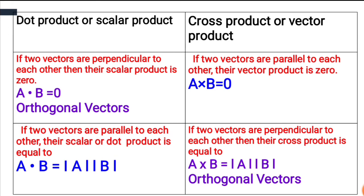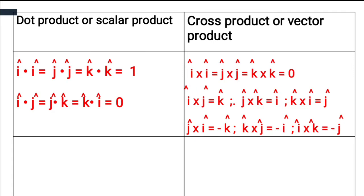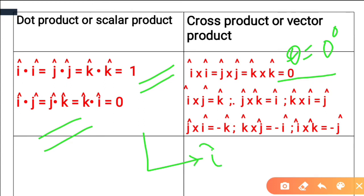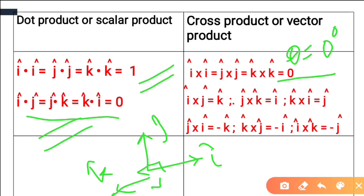For dot product, same unit vectors give answer 1: i·i = j·j = k·k = 1. But for cross product, the same unit vectors give 0, because the angle between same unit vectors is 0°, and sin 0° = 0. The unit vectors i, j, k are mutually orthogonal — i is in the x-direction, j in y-direction, k in z-direction — with 90° angles between them, so cos 90° = 0 for different unit vectors in dot product.